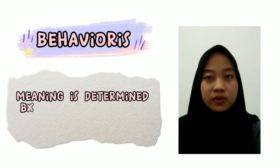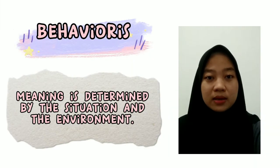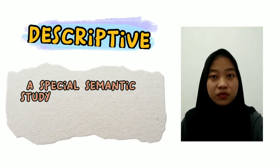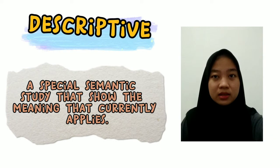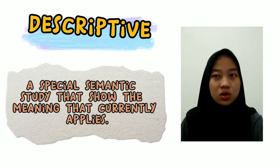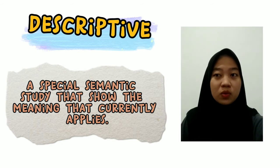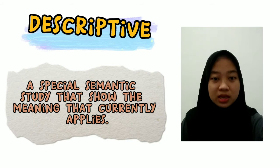The third is behaviorist. Behaviorist meaning is determined by the situation and by the environment. The fourth is descriptive — a special semantic study that shows the meaning that currently applies. It only focuses on the meaning of the word when the word first appears, or only pays attention to the present meaning.